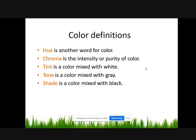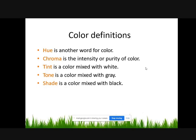Shade is a color mixed with black. Shapes are enclosing objects that can be created by line, or created by color and value changes that define the edges. These are some diagrams for shapes.